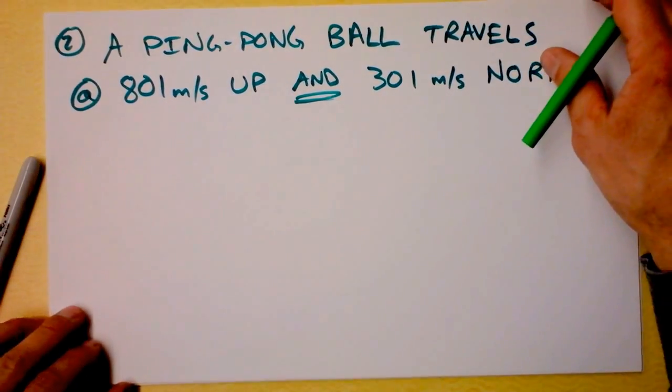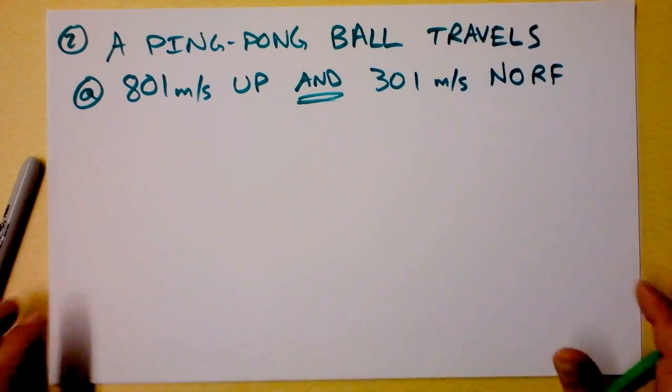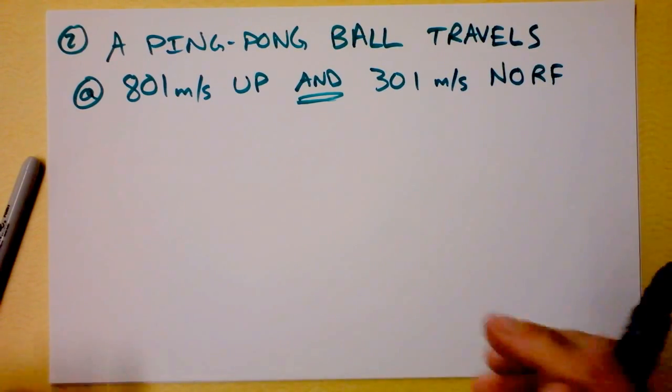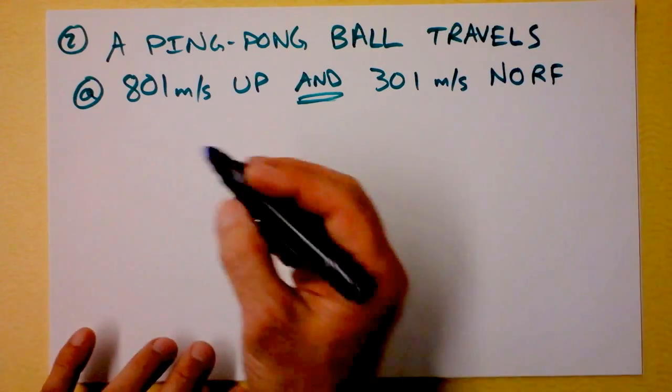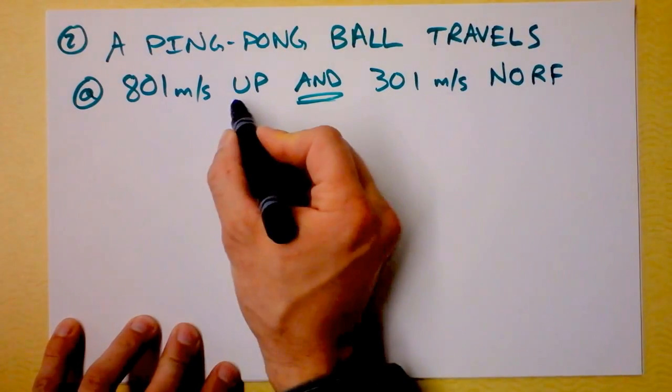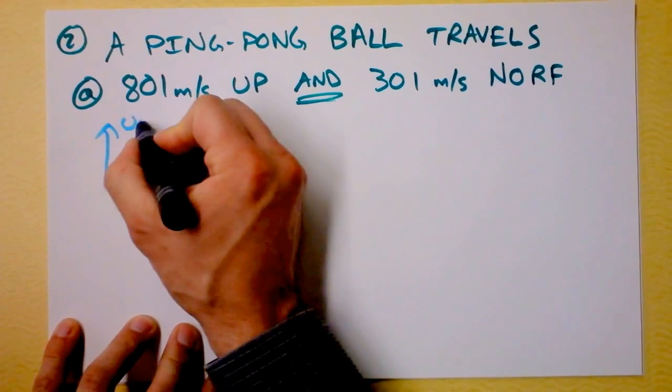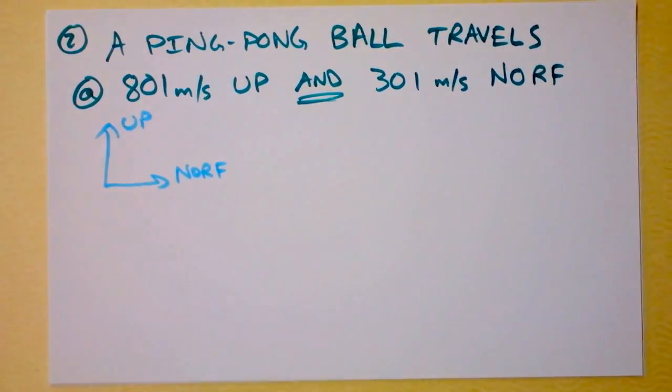A ping pong ball travels at 801 meters per second up, and 301 meters per second to the north. And this gives my students great pains to do it. But perhaps you can triumph where they sometimes struggle. Or if you're one of my students, maybe you will begin to triumph in just a moment. Here we go. I'm trying to draw up and I'm trying to draw north. My personal preference from my coordinate system is to show up right there, and north right there. So I'm trying to add these two vectors.